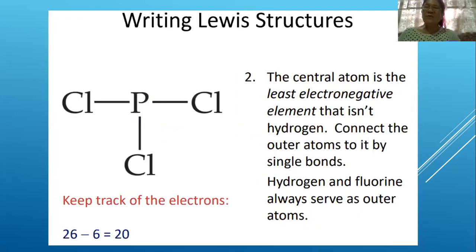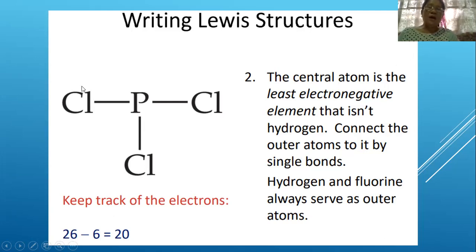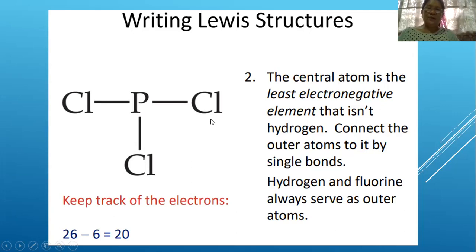The second rule is to identify the central atom, which is the least electronegative element. Phosphorus has a valence electron count of five while chlorine has seven, so phosphorus is the least electronegative and will be placed at the center, with the three chlorine atoms connected around it.